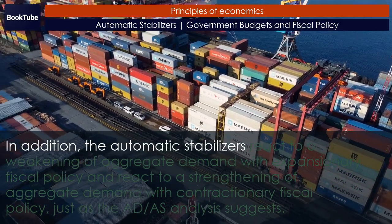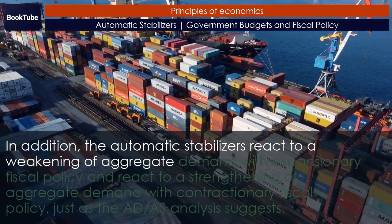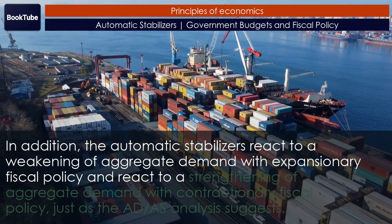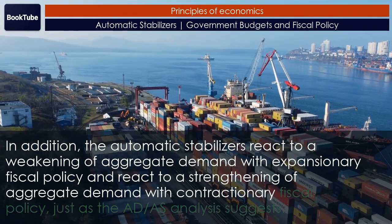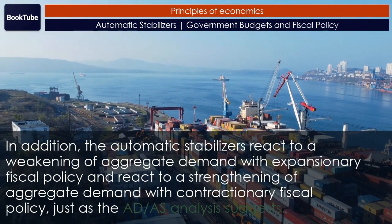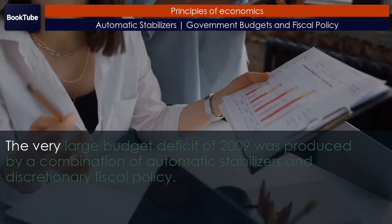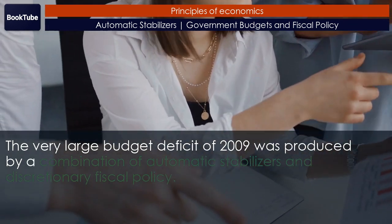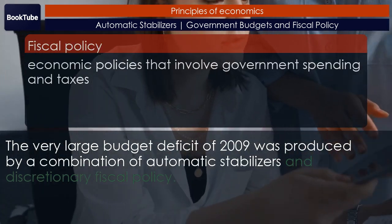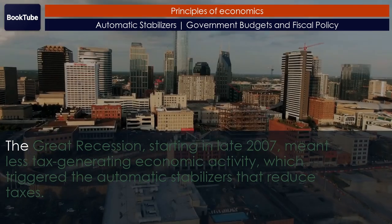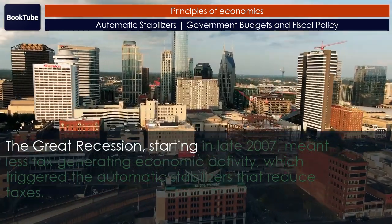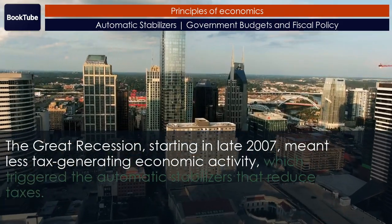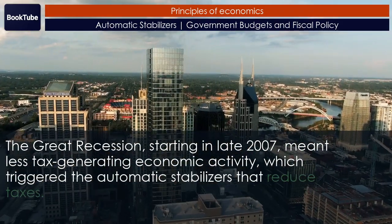In addition, the automatic stabilizers react to a weakening of aggregate demand with expansionary fiscal policy and react to a strengthening of aggregate demand with contractionary fiscal policy. Just as the AD-AS analysis suggests, the very large budget deficit of 2009 was produced by a combination of automatic stabilizers and discretionary fiscal policy. The Great Recession, starting in late 2007, meant less tax-generating economic activity, which triggered the automatic stabilizers that reduce taxes.